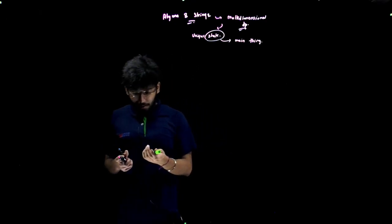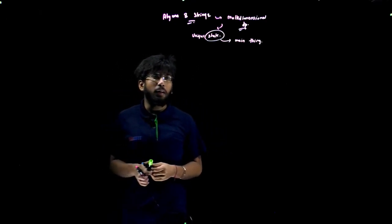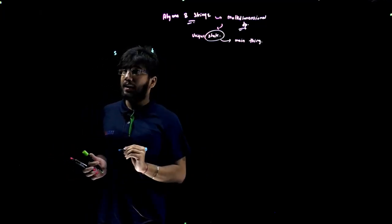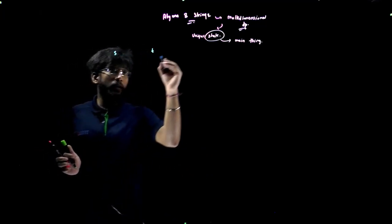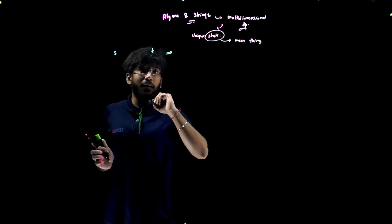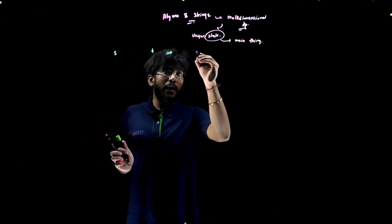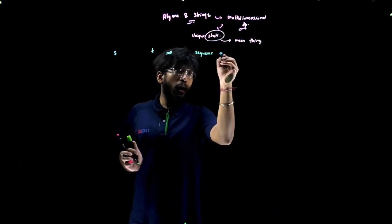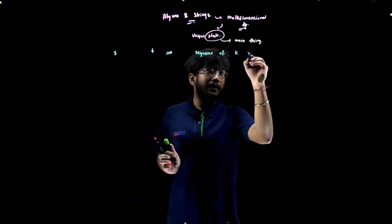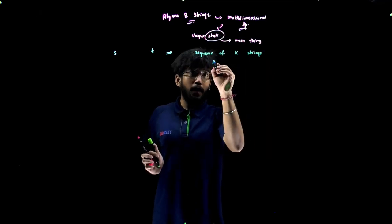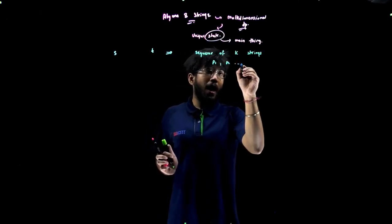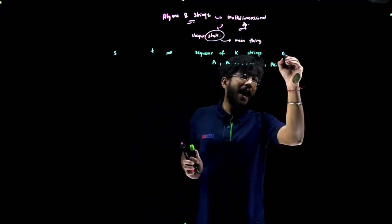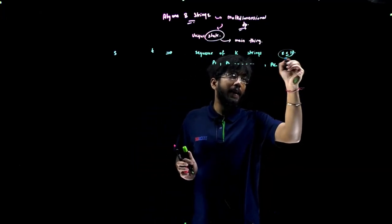I'll explain the question. The question is very simple. We are given two strings S and T, and Alyona is actually given a task of finding a sequence of k strings p1, p2, and so on up till pk, where k is actually less than equal to 10, which is the catch.